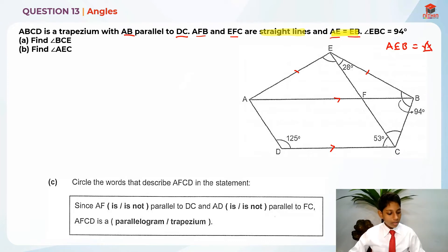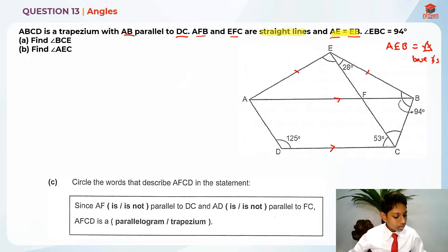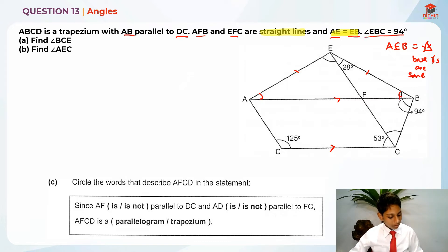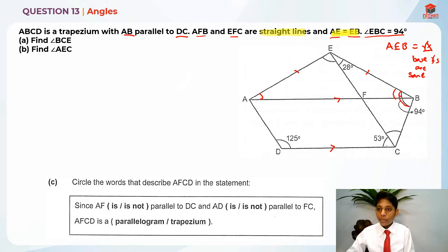So their base angles are the same — base angles are the same. These two base angles over here. And angle EBC is 94 degrees over here, this angle right here. For the first part, let's find angle BCE.